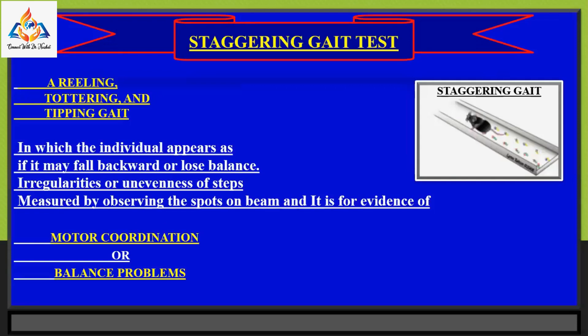The staggering gait test involves gait analysis, which is the study of the manner of walking. It is used worldwide to aid in the diagnosis and treatment of a wide range of ambulatory problems including Parkinson's disease, muscular dystrophy, and nerve injury. It is increasingly being recognized as a useful preclinical assay to better understand how animal models may reflect the human condition and to generate quantitative metrics of normal and abnormal gait.